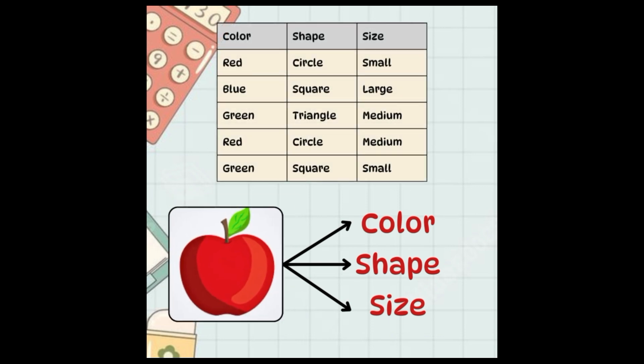Imagine we are trying to predict the outcome of a categorical variable with multiple classes, such as predicting the type of a fruit based on its color, shape, and size.